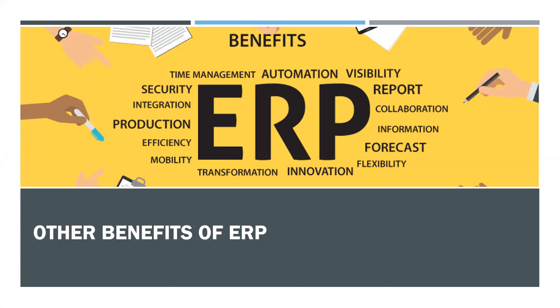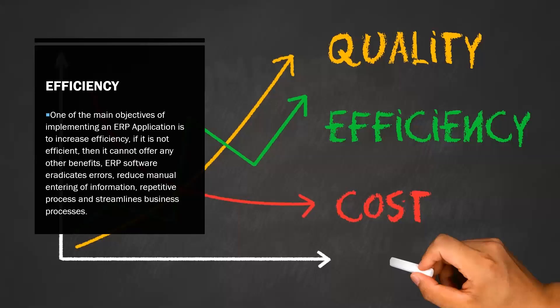So let's go into the other benefits of ERP. One of the main objectives of implementing an ERP application in business is to increase efficiency. If it is not efficient, it cannot offer any other benefits. It has to reduce errors, reduce manual work, reduce entering of information manually, reduce repetitiveness, and other processes have to be streamlined. So one of the key objectives is that it makes your business run in the most effective way, and this is what ERP does so well.